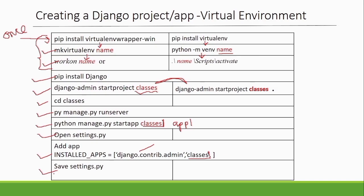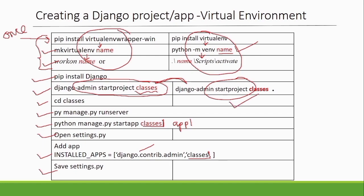So let's recap the steps: create a virtual environment, create the Django project, install Django, then create the project. As a beginner, always check whether your server is running before creating applications — many times mistakes in setup steps cause the server not to run. Then create your application and register it in `settings.py` so Django knows it exists.